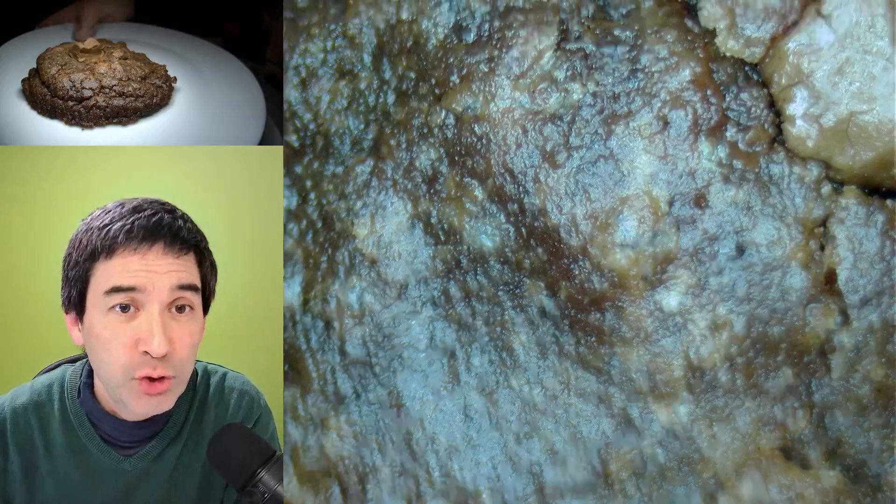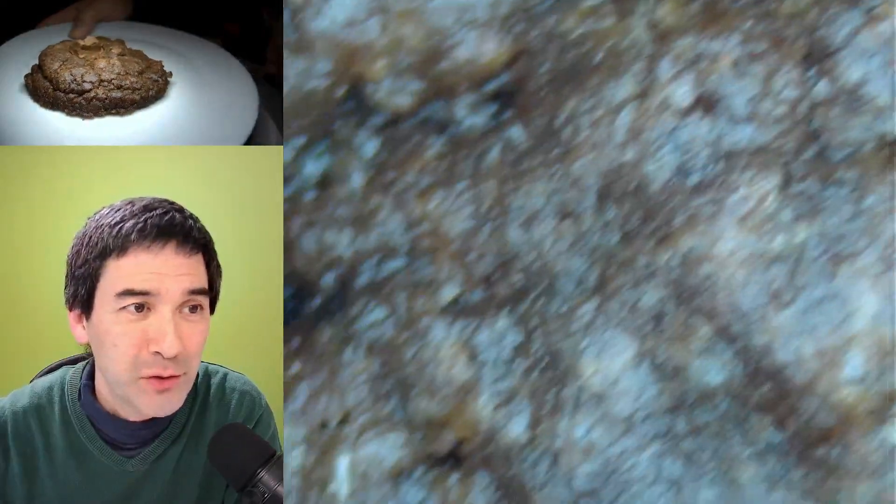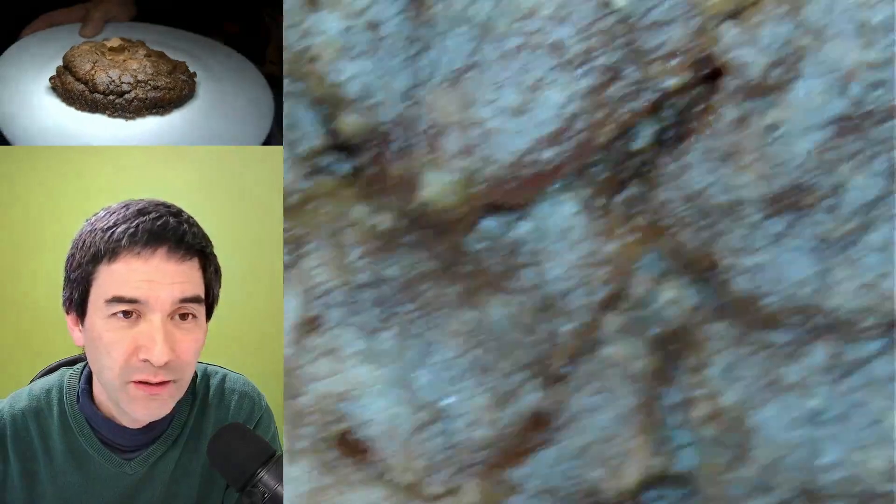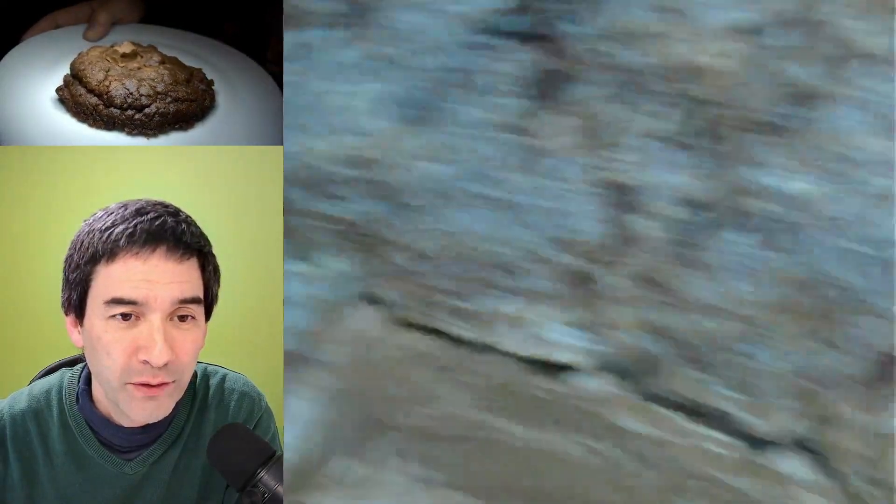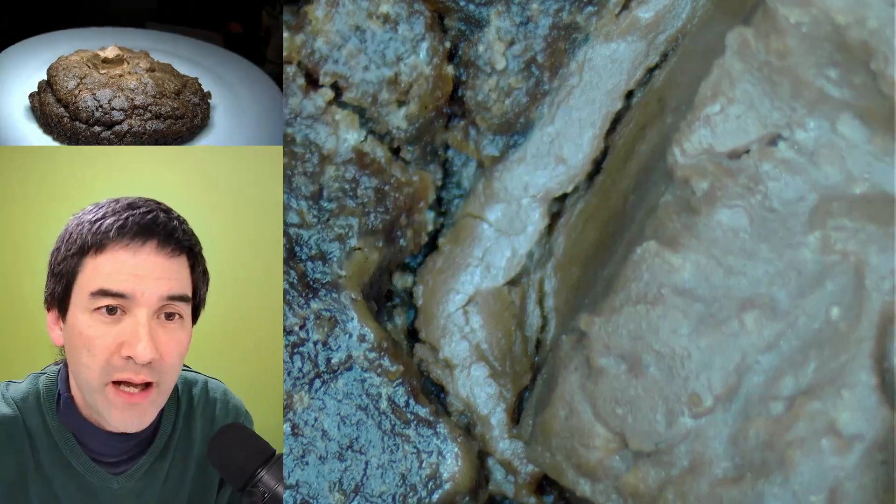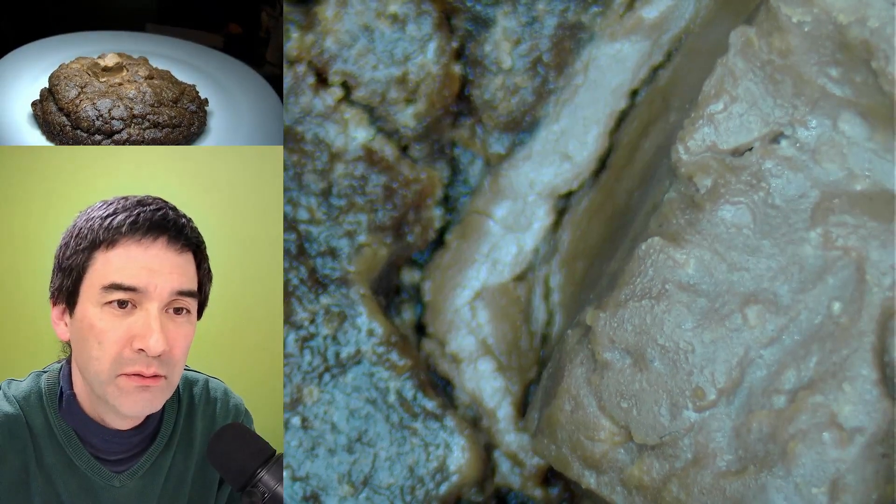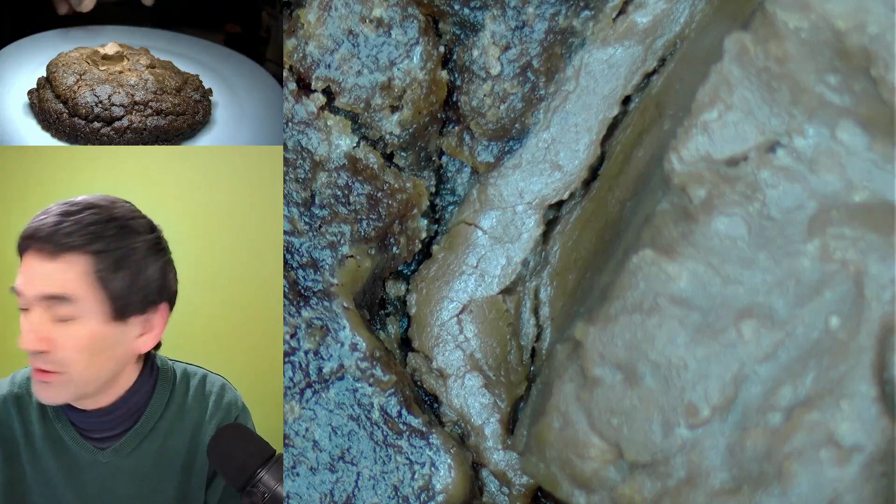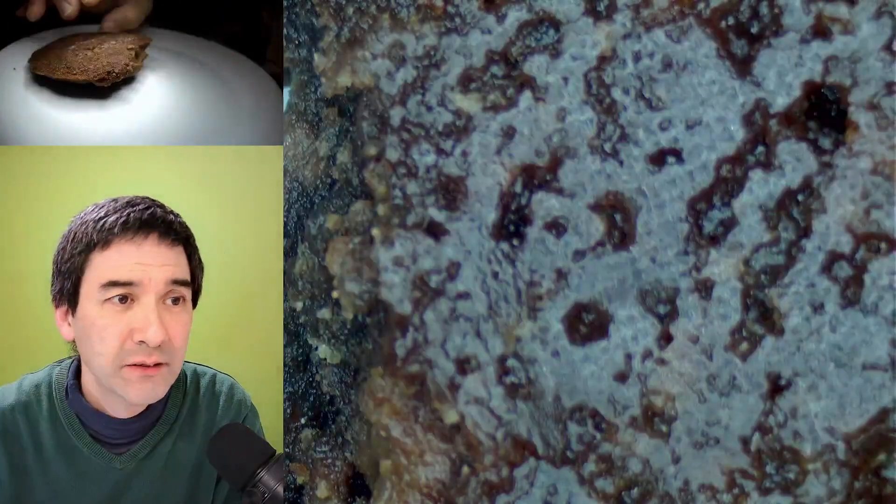So that's the chocolate cookie now under the microscope. Not a lot of things to see. That's the chocolate here. It's a little bit blurry because it's much higher up, but let's refocus. Maybe I'm going to flip it around on the backside because maybe it's a little bit more flat here.